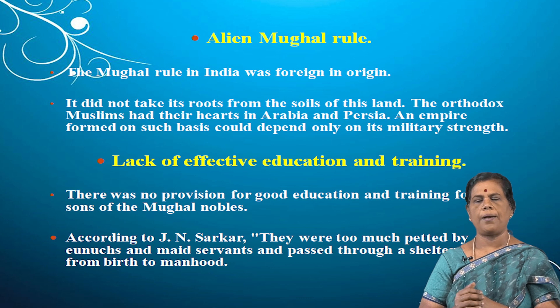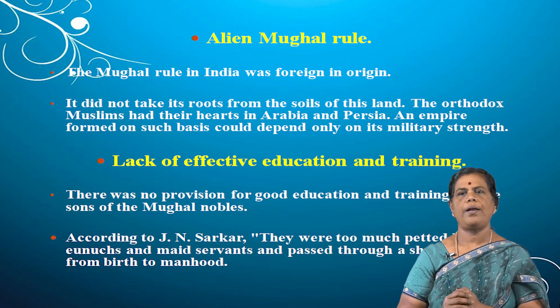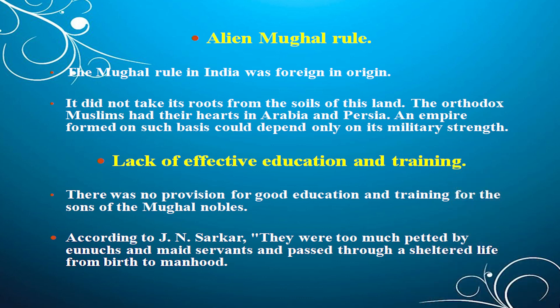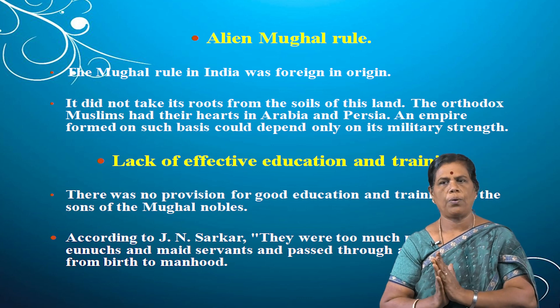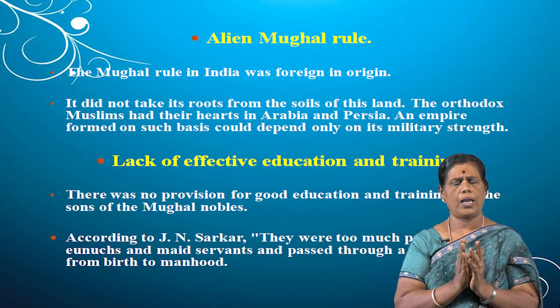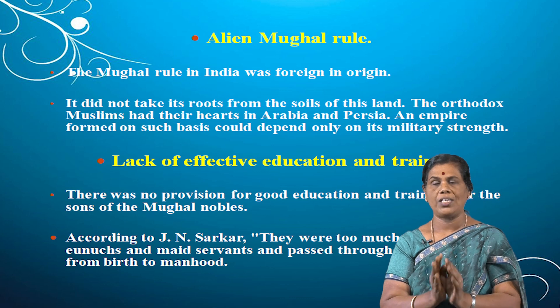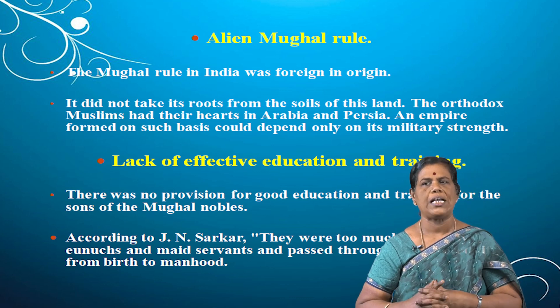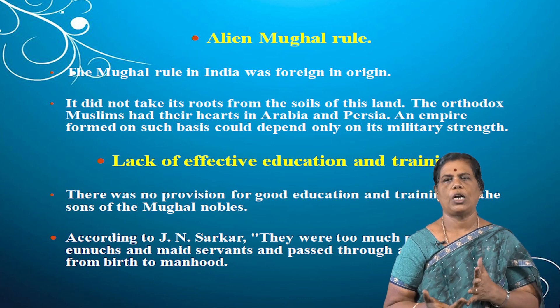Lack of effective education and training was also a reason. There was no provision for good education and training for the sons of Mughal nobles. According to Jadunath Sarkar, they were too much pampered, made servants, and passed through a sheltered life from birth to manhood — a life of luxury — with no education or character development.